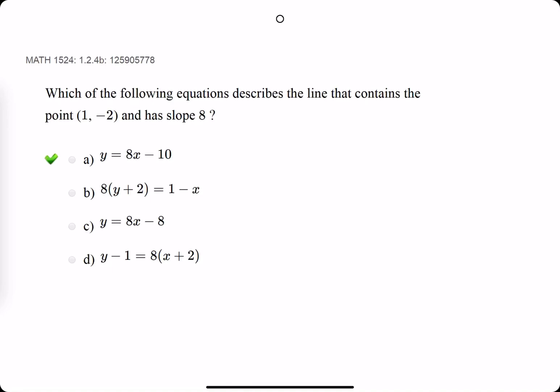Okie dokie. Another quick example for this problem. We're given a point and we're given a slope and they say which is the equation of that line.